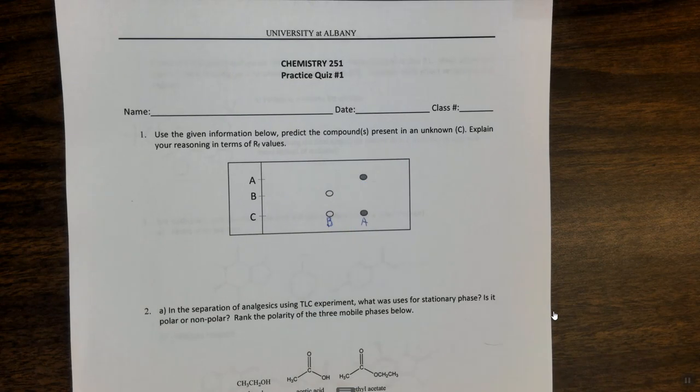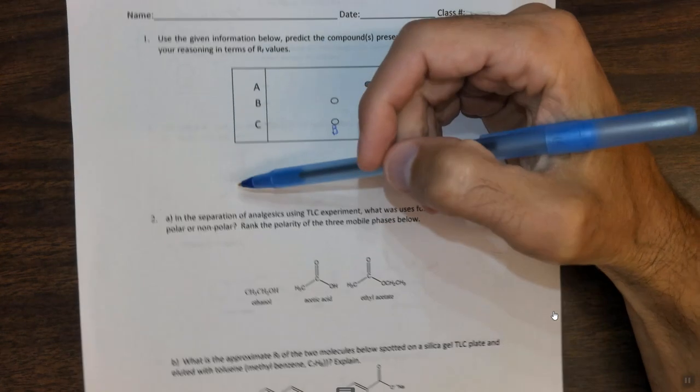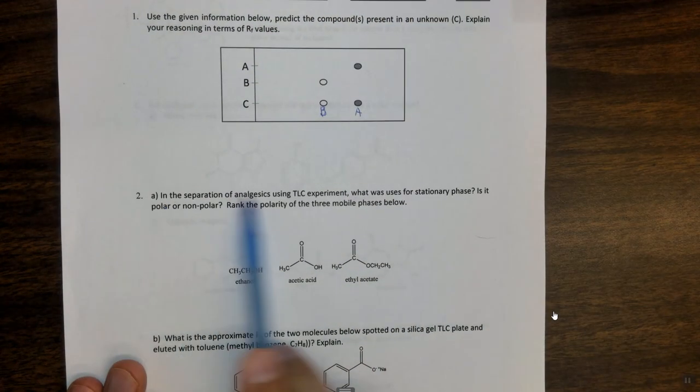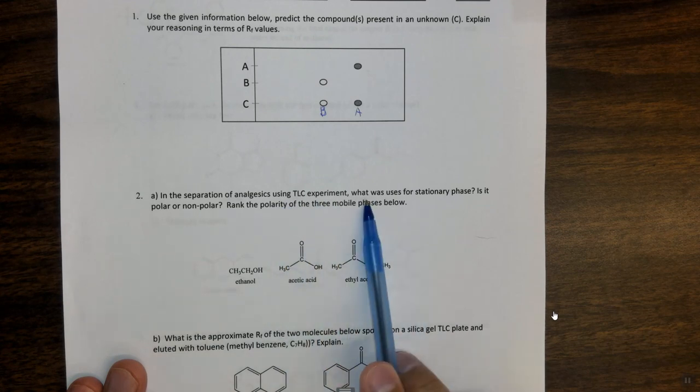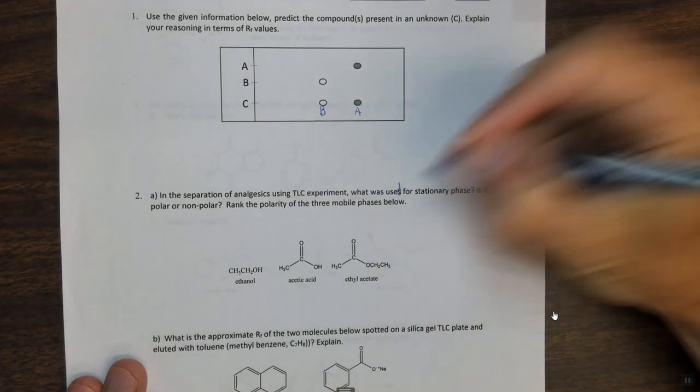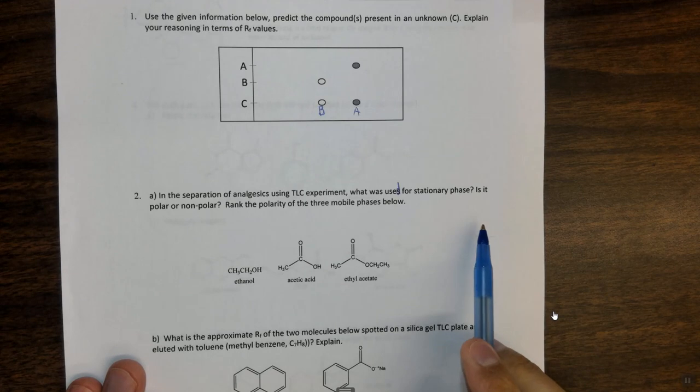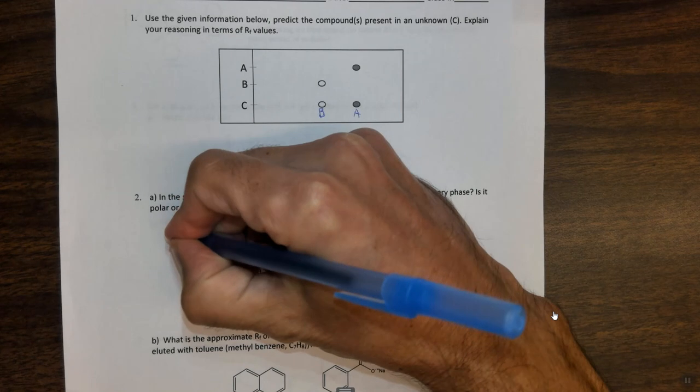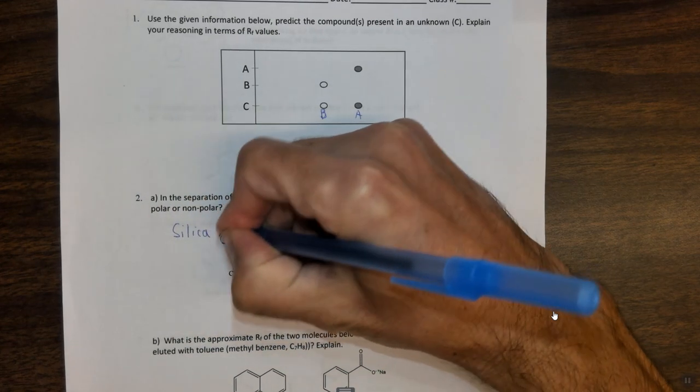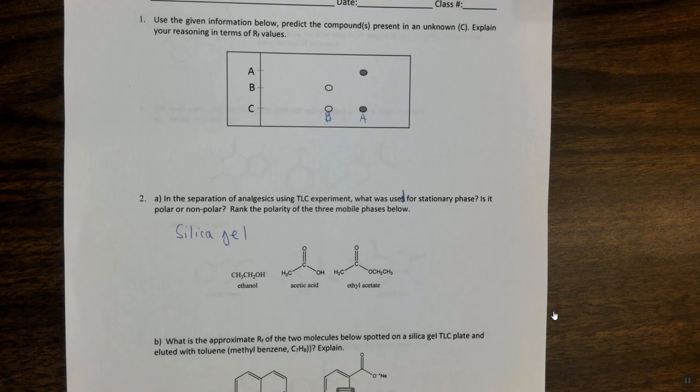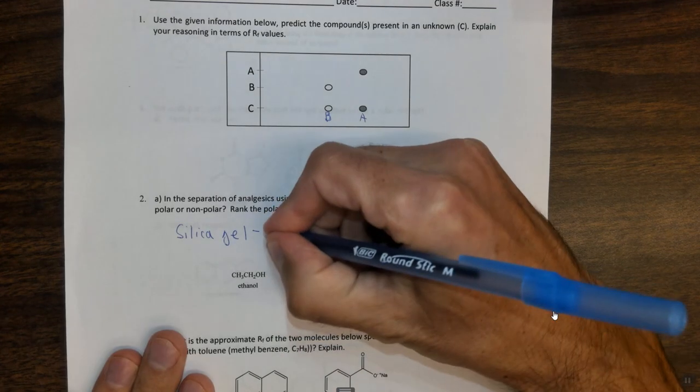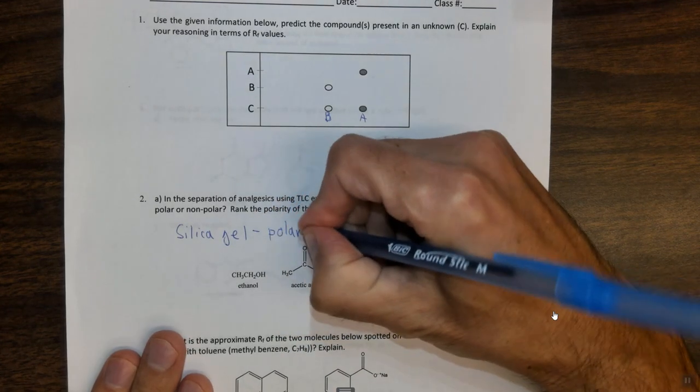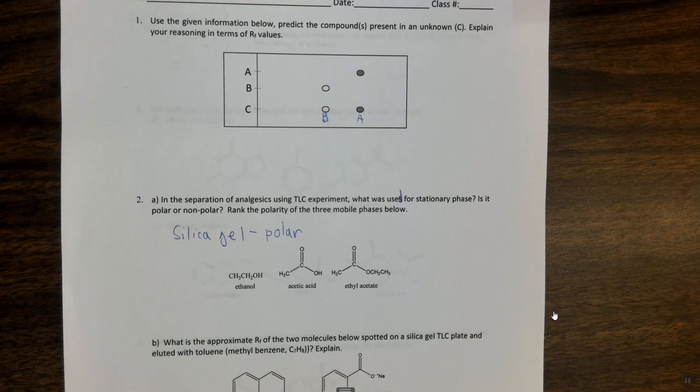So this is basically how we can identify this. C has both B and A, because it has the same spot as B and the same spot as A, which are standards. This is very similar to what you have done in the lab experiment, except you did it on analgesics. Number two. In the separation of analgesics using TLC experiment, what was used for the stationary phase? Is it polar or nonpolar? We used silica gel, which is basically sand, SiO2, and it has some OHs on it, and this is extremely polar.